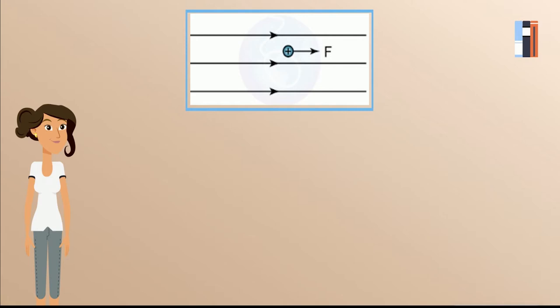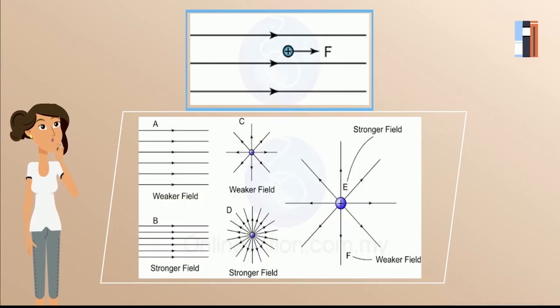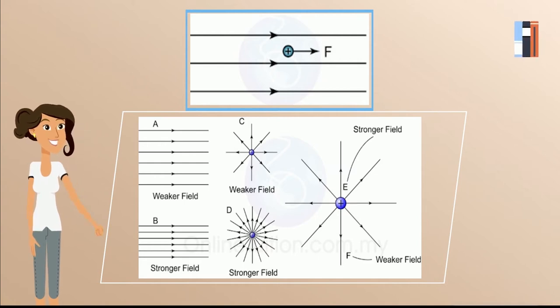The strength of the electric field is indicated by how close the field lines are to each other. The closer the field lines, the stronger the electric field in that region. The lines of force are directed outwards for a positive charge and inwards for a negative charge. Also, the electric lines of force will never cross with each other.